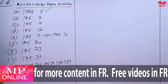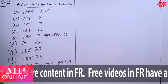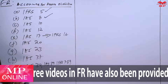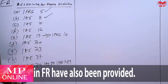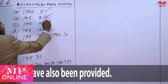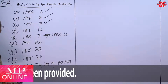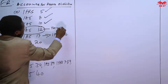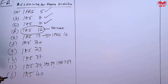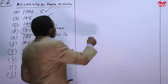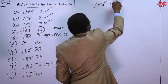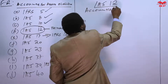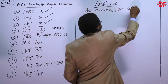IFRS 5 is non-current assets held for sale and discontinued operations. IAS 8 is accounting policies, accounting estimates, and errors. IAS 10 is events after the reporting date. Now, we want to look at IAS 12 — this is in respect to taxes. So today, we want to look at IAS 12: accounting for taxes.